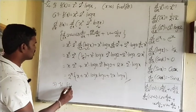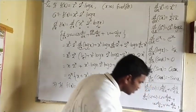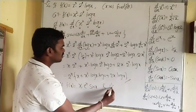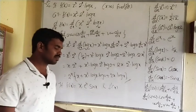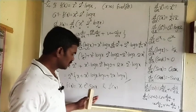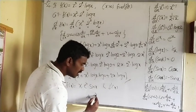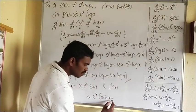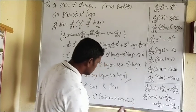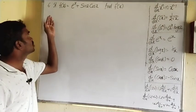Fifth question — homework: if f(x) = x·e^x·sin x, find f'(x). The answer is e^x·(x·cos x + x·sin x + sin x). Try this yourself using the u·v·w formula.